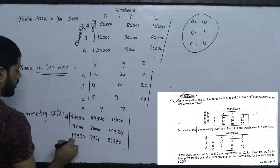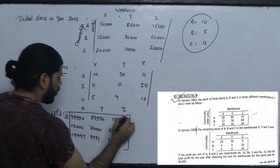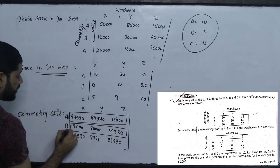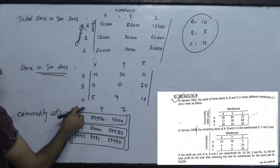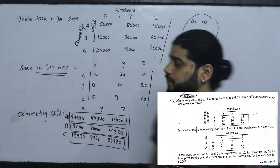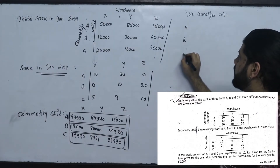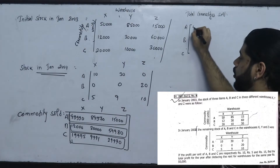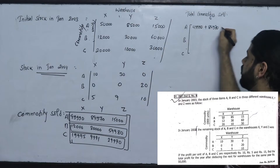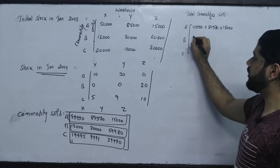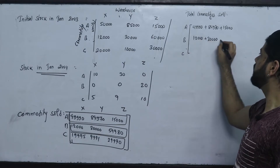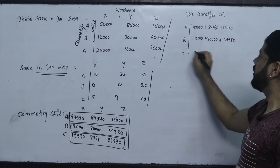This is not A. This is A. This is B. This is C. This is X. This is Y. Total becomes A. This becomes A. This becomes B. This becomes C. 49,990 plus 84,970 plus some value. B totals: 12,000 plus 30,000 plus 59,980.